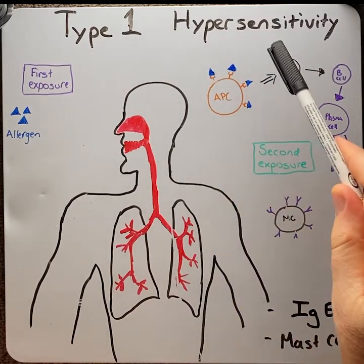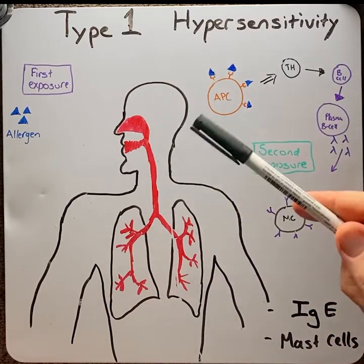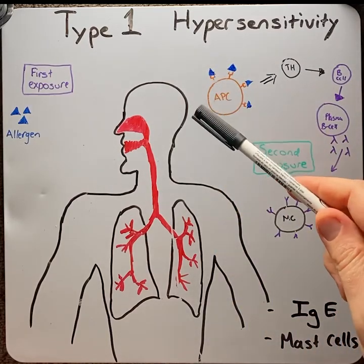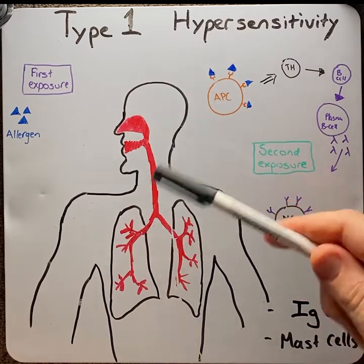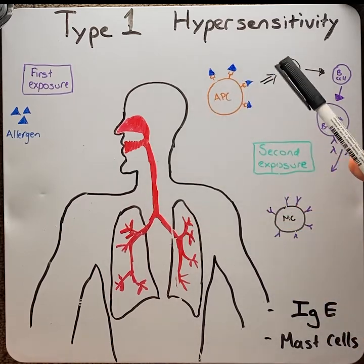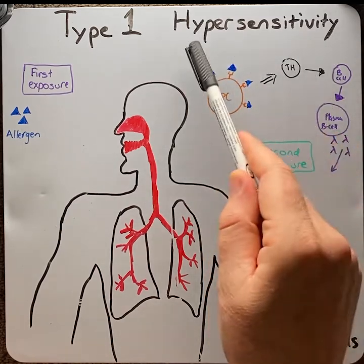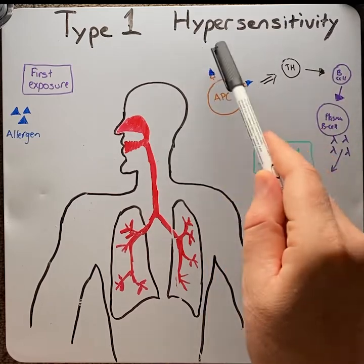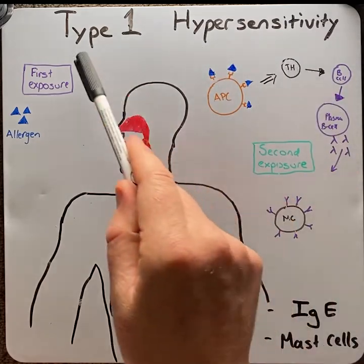Hypersensitive reactions are excessive immune responses to normally harmless substances that induce inflammation and lead to tissue damage. There are four basic types of hypersensitive reactions.